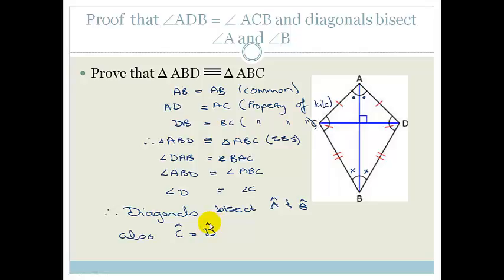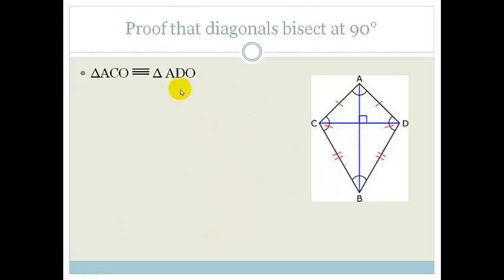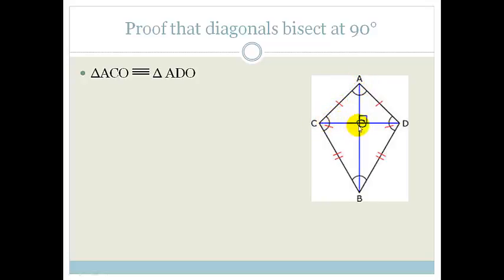Let's look at the next proof — we're going to prove that the diagonals bisect at 90 degrees. Using the previous two large triangles won't help us here. Instead, I'll look at the smaller triangles, calling the intersection point O, and consider triangle ACO and triangle ADO.